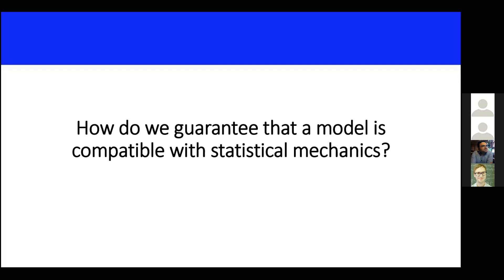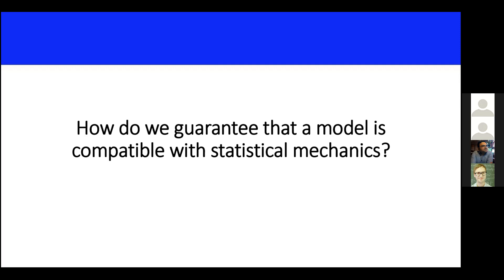The conclusion is that the criterion of hydrodynamic stability I have presented is important, but it's not enough to guarantee that your theory is compatible with statistical mechanics. You need to guarantee something more — you need to make a stronger check for the stability of your theory. In the rest of the talk, I will try to present how to extend the stability criterion to incorporate all the other criteria that come from statistical mechanics. A brief summary: typical inequalities you get are positive specific heats, positive compressibility, and the ratio CP/CV — the adiabatic index — is always greater than one. All of them come from fluctuation identities.